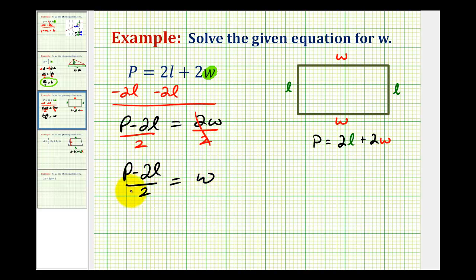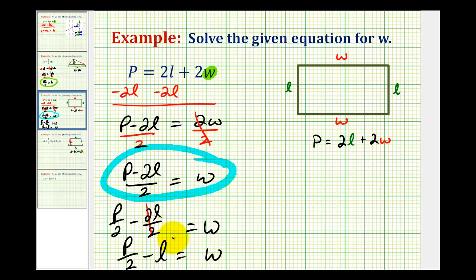However, we could express this in a slightly different way. Since we're dividing by one term or a monomial, we could write this as P divided by 2 minus 2l divided by 2. When we do this, notice how this fraction simplifies. We would have P over 2 minus l equals w. So this form and this form are correct, just written in a different way.